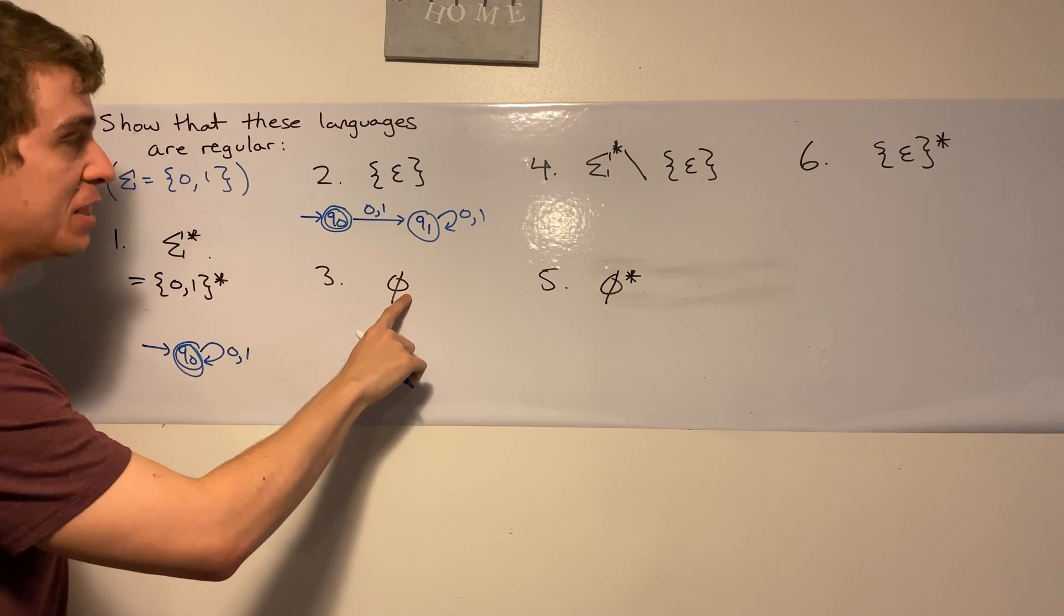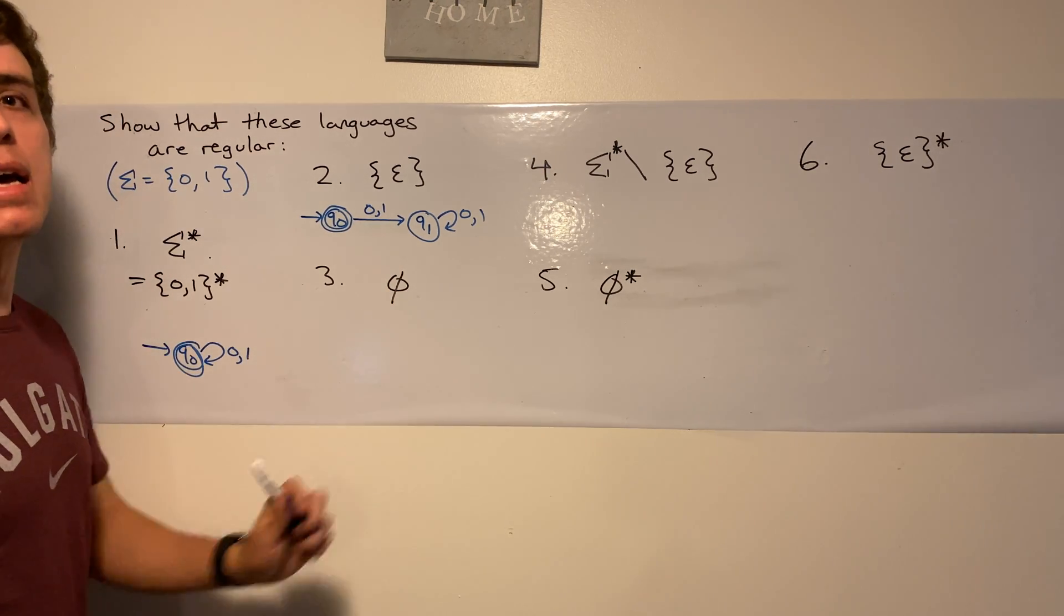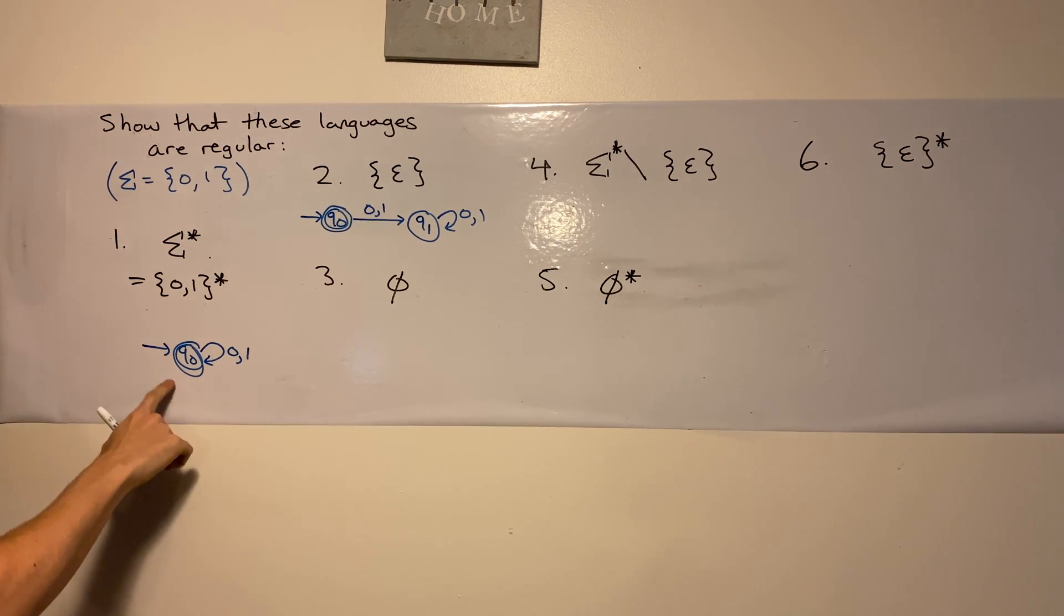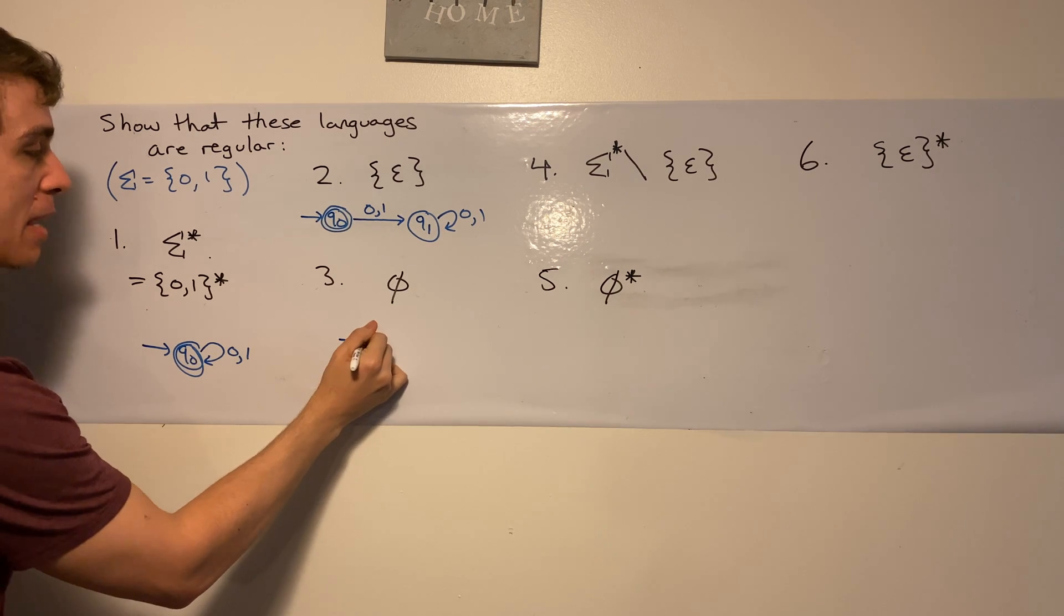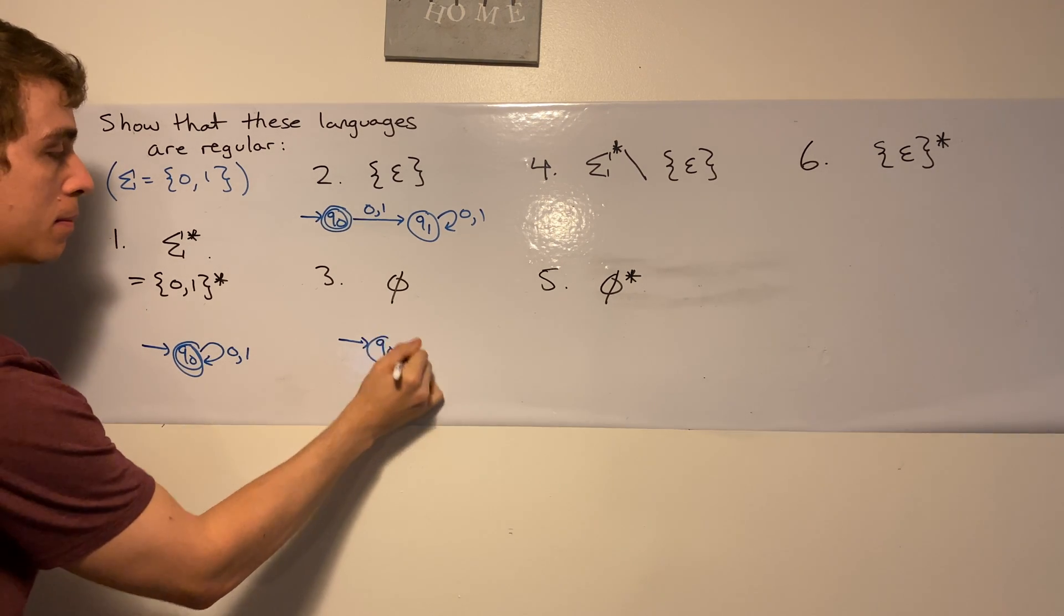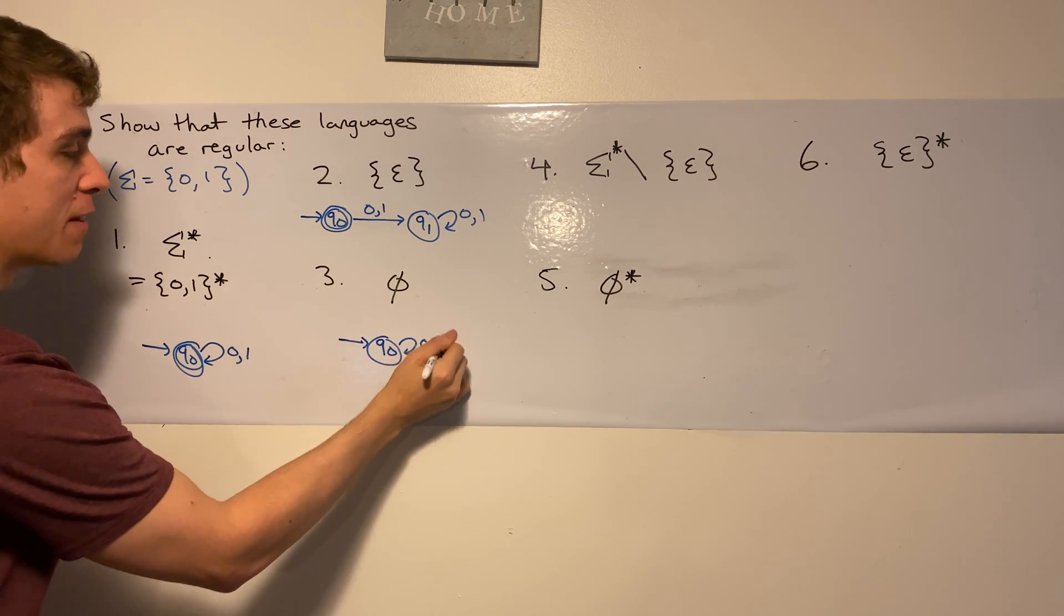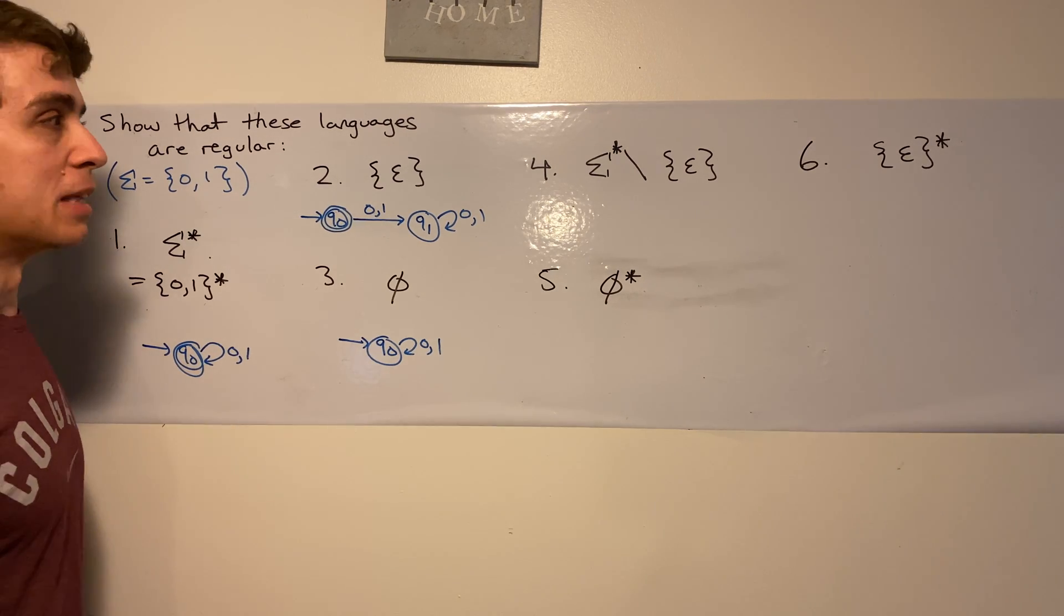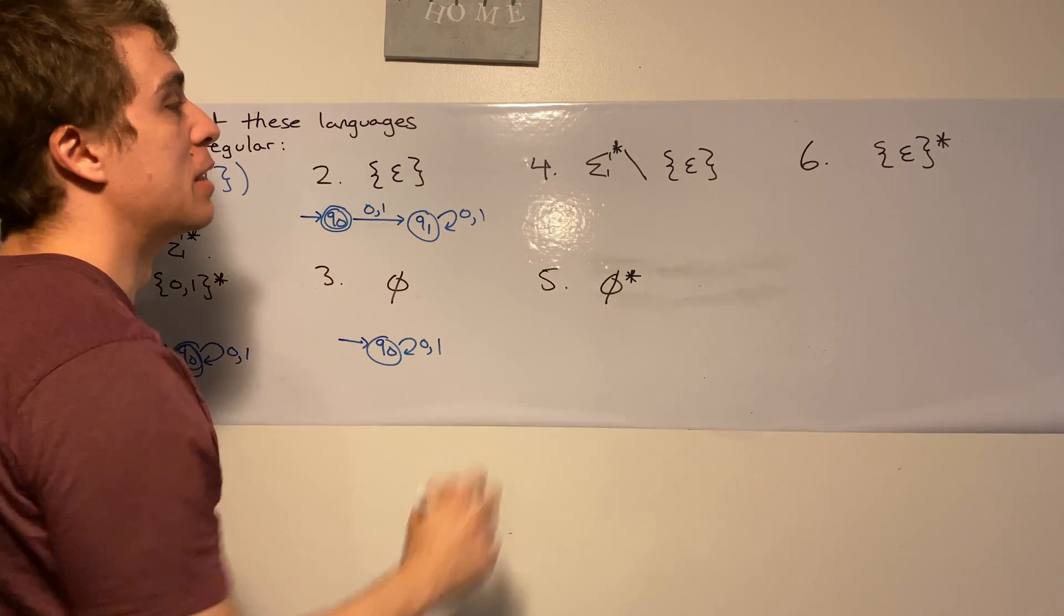This one says that the DFA cannot accept anything. So it's basically just the opposite of this DFA that we made a little bit earlier. So let's make a small DFA where it doesn't accept any string. Let's move on to this one.